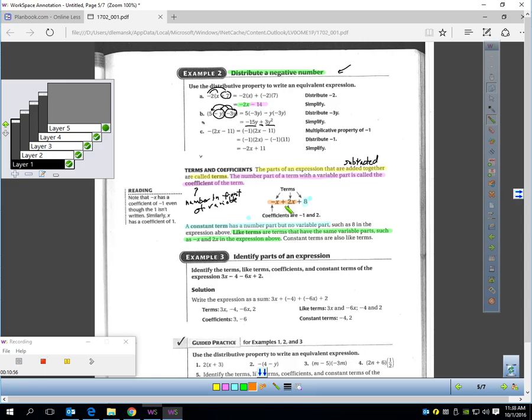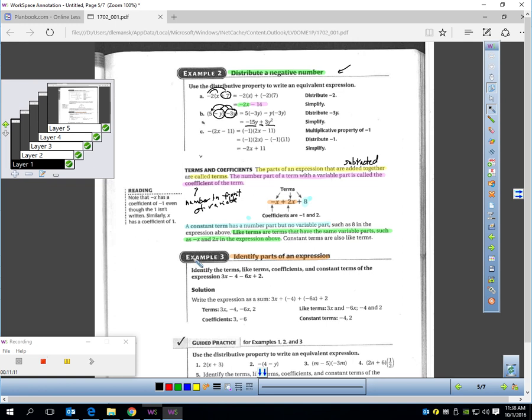You are definitely going to be asked to do this in the homework. They will have you identify parts of an expression. And this is exactly the kind of problem they'll have in the homework. Identify the terms. There's one thing we've got to identify. Like terms. There's a second. Coefficients. There's a third. Constants. There's a fourth.